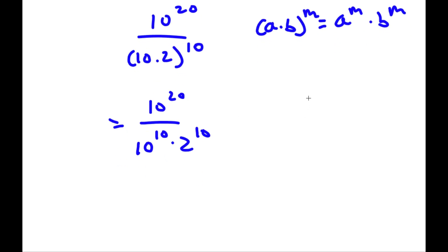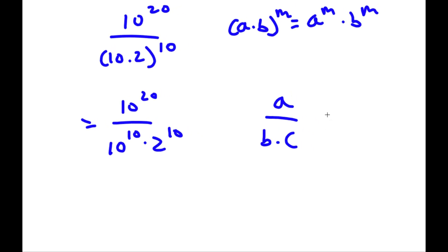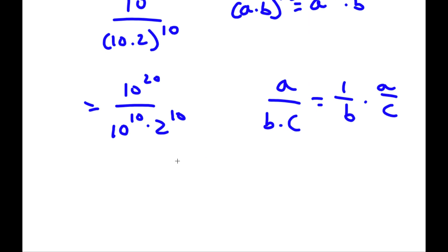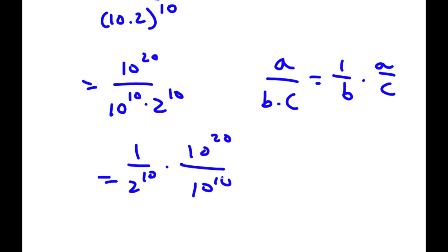Now if I have something in the form a over b times c, this can be written as 1 over b times a over c. So 10 to the power of 20 over 10 to the power of 10 times 2 to the power of 10, I'm going to rewrite this as 1 over 2 to the power of 10 times 10 to the power of 20 over 10 to the power of 10.